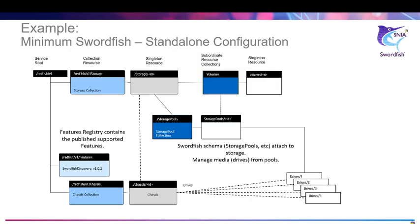The diagrams on the following two slides show the differences in the two configurations described in the requirements we just covered. This diagram reflects an example for a Swordfish standalone configuration and shows the basic elements of the minimal Swordfish implementation described and where the various properties live — for example, the Swordfish collection off the service route with the corresponding storage instance. You can see here the links to the volume and storage pools, and also the features registry showing Swordfish Discovery. Note that neither of these diagrams show the complete installation and implementation requirements for the underlying Redfish implementation as well.